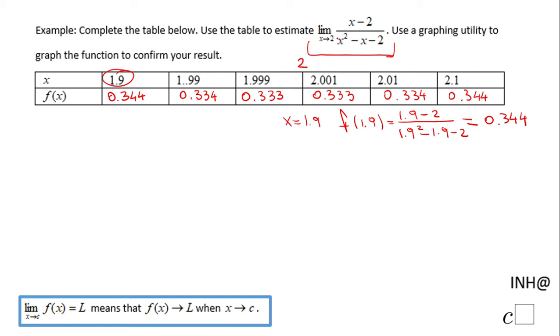Limit x approaching 2 - what is the function approaching? That's what a limit is. That's what it says here. So when x approaches 2 from this side you notice we go close to 0.333.